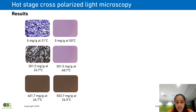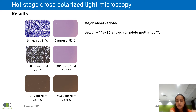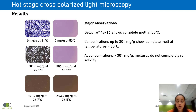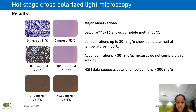Moving on to our example of Gelucire 48/16, we observed that on its own Gelucire 48/16 tends to show a complete melt at 50 degrees C. At concentrations up to 300 mg per gram, birefringence is observed at room temperature and a complete melt is observed at temperatures lower than 50 degrees C. Whereas at concentrations greater than 300 mg per gram, mixtures of CBD and Gelucire 48/16 do not completely re-solidify. Hence, even at room temperature, no birefringence is observed. Based on HSM data we can say that the saturation solubility of CBD in Gelucire 48/16 is greater than 300 mg per gram.